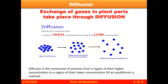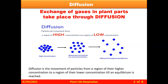Let us study what is diffusion. Exchange of gases in plant parts takes place through diffusion. The definition of diffusion: the net movement of particles from a region of high concentration to the region of low concentration. The movement of molecules will always take place from high concentration to low concentration, as shown in the diagram with blue circles, and it continues till equilibrium is reached.